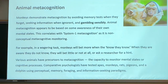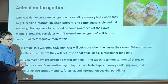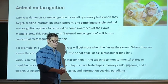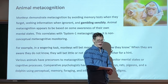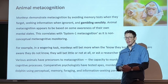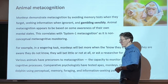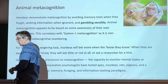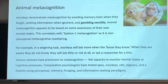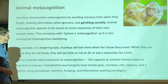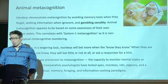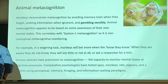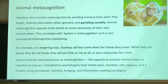Monkeys can do math tests and are given tokens to bet like poker chips. If they get a math question right they get a treat. When they know they know it, they'll bet all their chips; when they know they don't know, they'll bet little or nothing, or even ask for a hint. This shows monkeys and other animals — rats, pigeons, dolphins — have at least some ability to monitor their mental states. Dolphins doing tests for fish get really excited before answering when they know they know it. Social animals tend to have higher levels of metacognition — why?